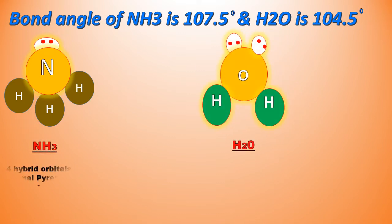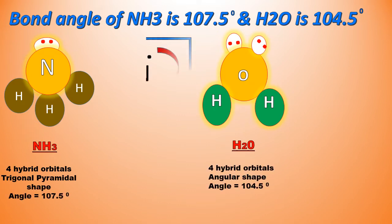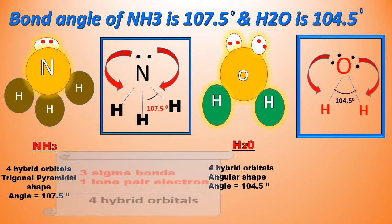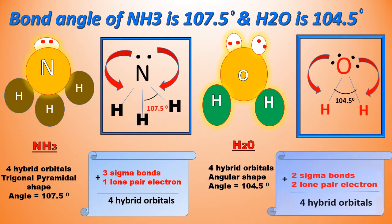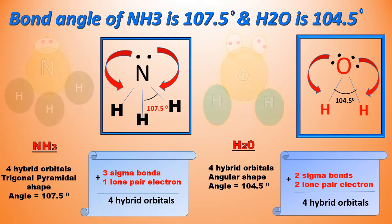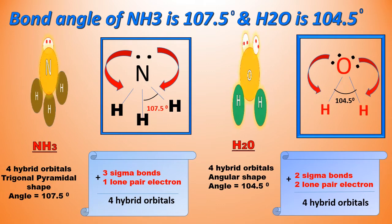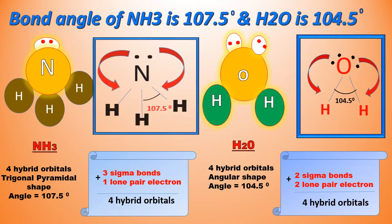According to the valence shell electron pair repulsion theory, two types of electron pairs are present around the central atom: lone pair of electrons and bond pair of electrons. In simple words, the lone pairs are unshared pairs of electrons, whereas the bond pairs are shared electron pairs.